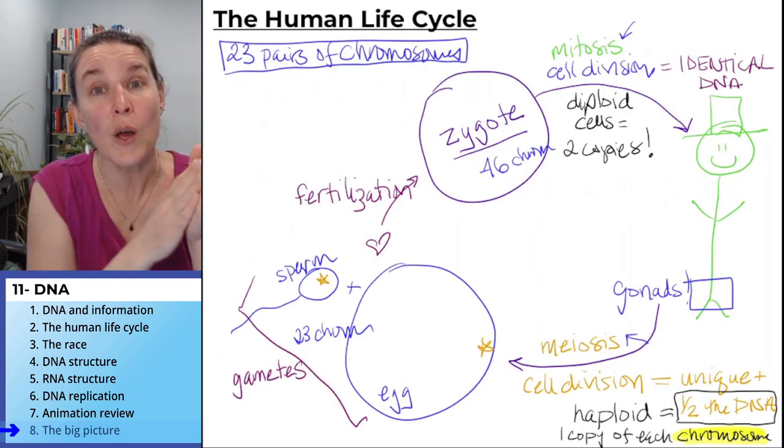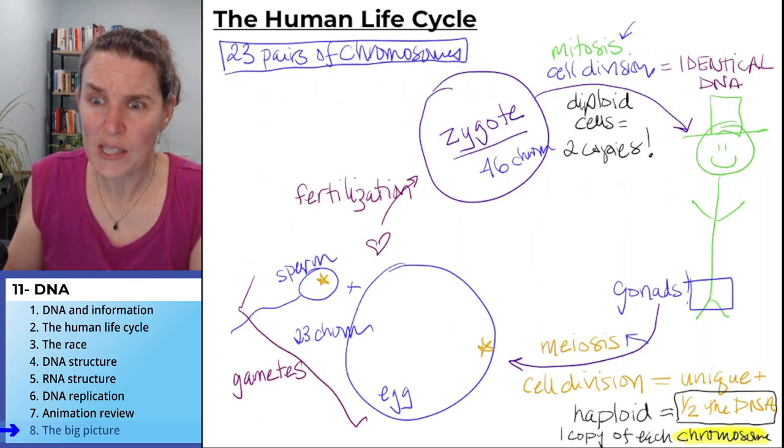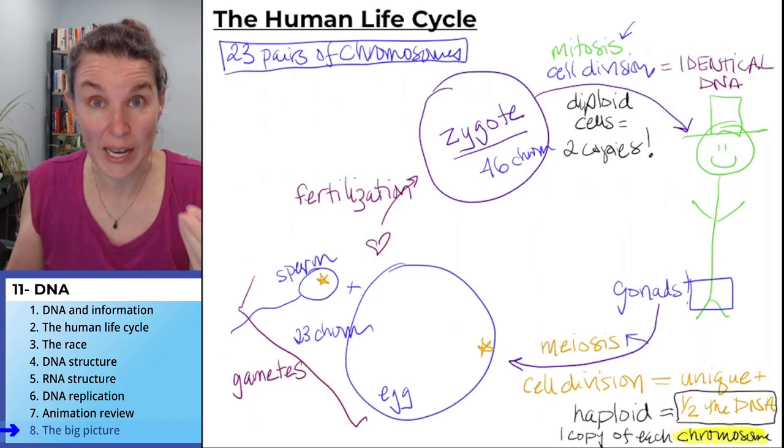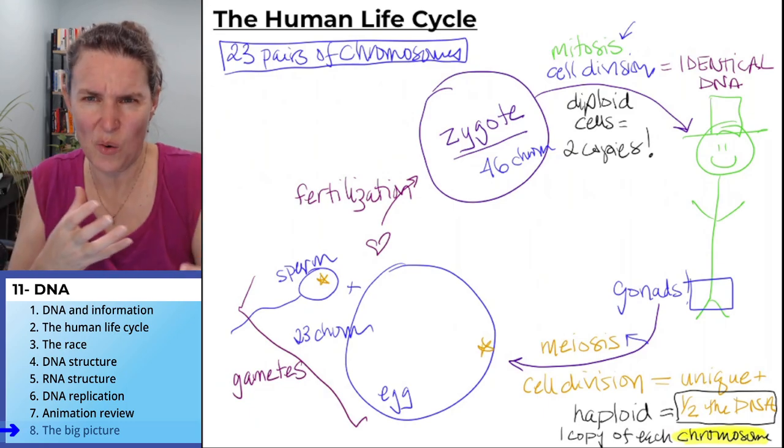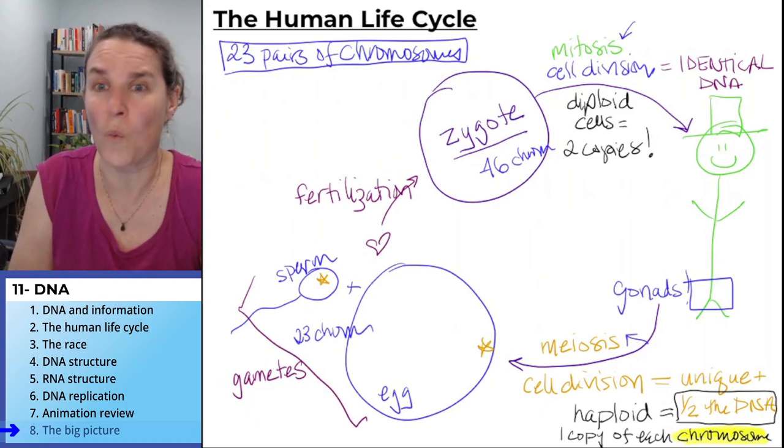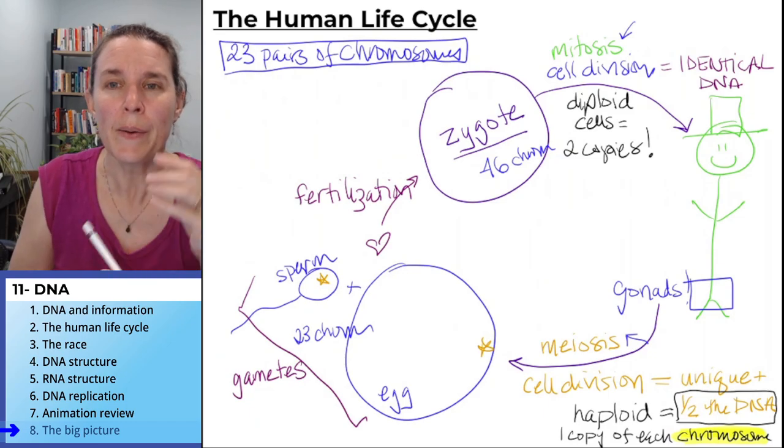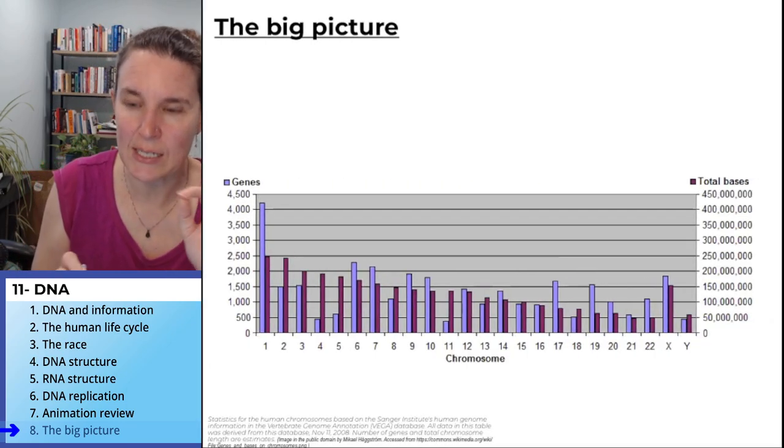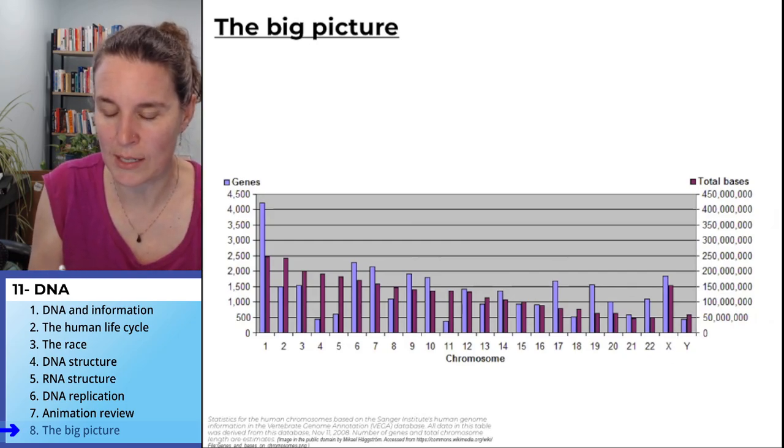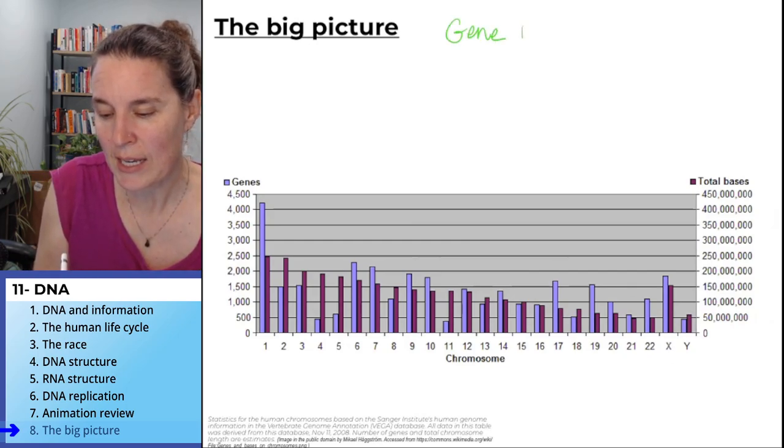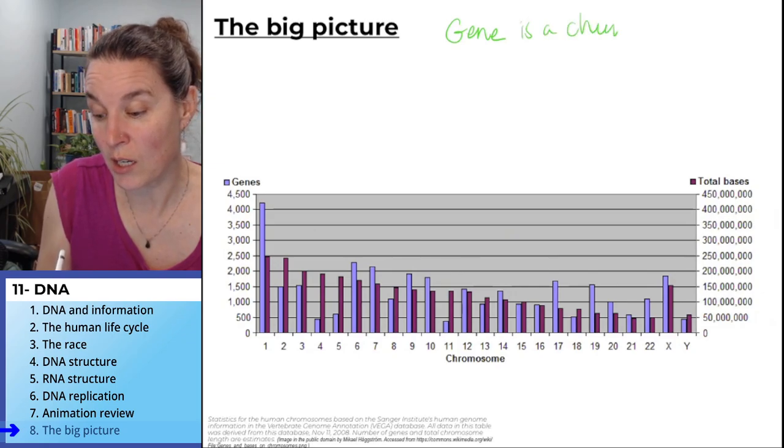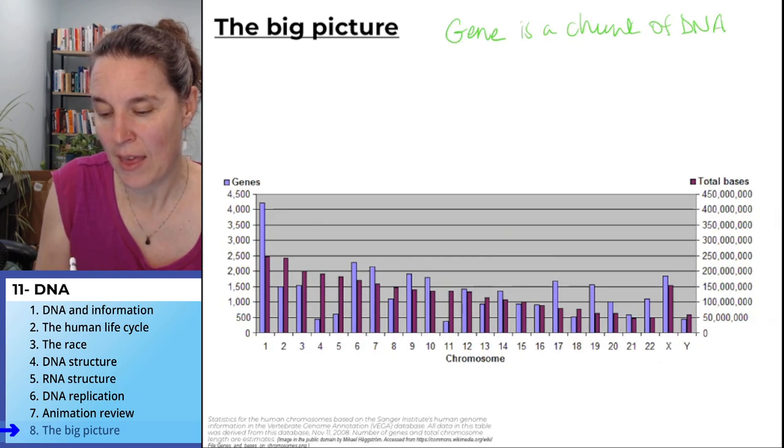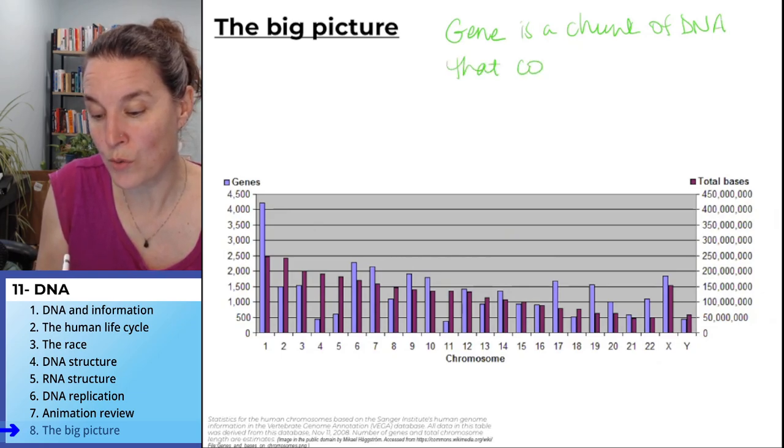And we haven't given a definition of the word gene and where a gene is. And like I said, I've said this before, we're going to have three lectures, I think, on heredity, on how genes work and how we inherit the things that we do and why we look the way that we do. A gene—this is going to get us to the next lecture—a gene is a chunk of DNA that codes for a protein.